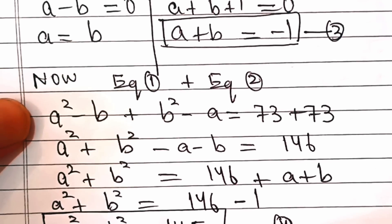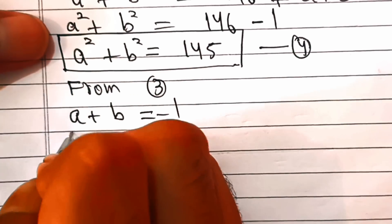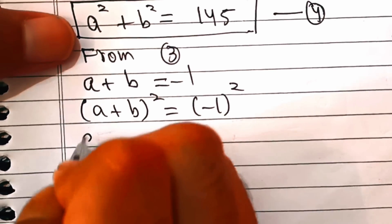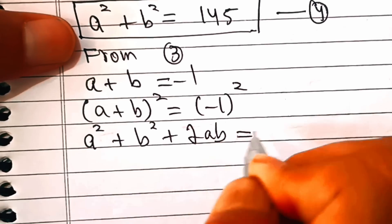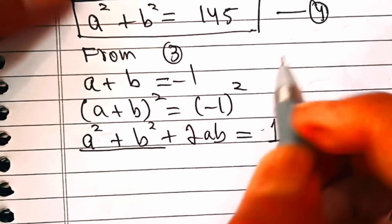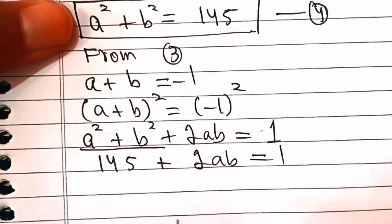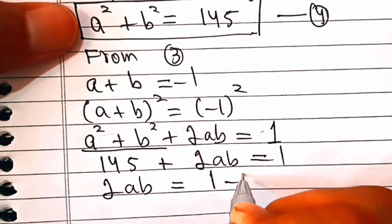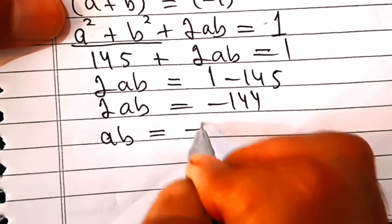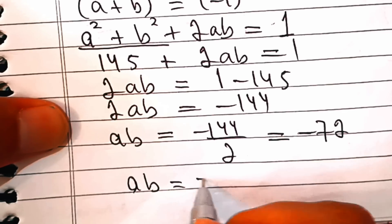From equation 3, a plus b equals minus 1. Squaring both sides: a plus b squared equals a squared plus b squared plus 2ab equals 1. From equation 4, a squared plus b squared is 145. So 145 plus 2ab equals 1, meaning 2ab equals 1 minus 145 equals minus 144. Therefore ab equals minus 72. Let's call this equation 5.